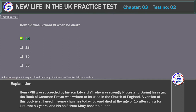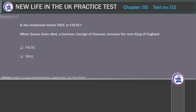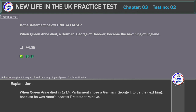Is the statement below true or false? When Queen Anne died, a German, George of Hanover, became the next king of England. Correct answer: True. Explanation: When Queen Anne died in 1714, Parliament chose a German, George I, to be the next king, because he was Anne's nearest Protestant relative.